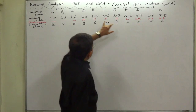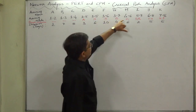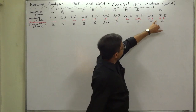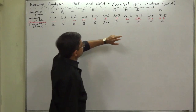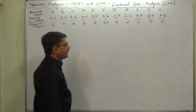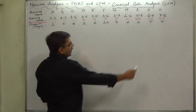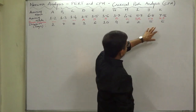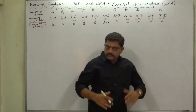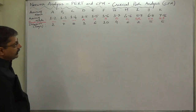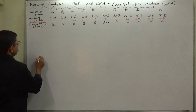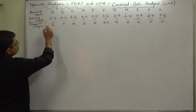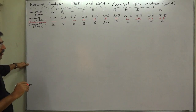J starts at node number six and F and H both end at node number six - J has two predecessors. Similarly, K starts at node number seven and G and I both end at node number seven. J and K are not predecessors of any other activities, meaning after completing J and K the project is finished. Now let's start drawing the network chart, writing node numbers while preparing it.